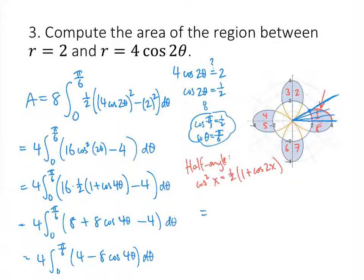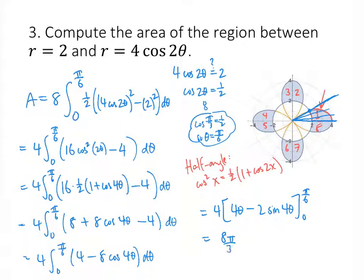By simple substitution, the antiderivative of 4 is 4 theta, and the antiderivative of 8 cosine 4 theta is 2 sine 4 theta. Plugging in pi over 6 and 0 and subtracting, the final answer is 8pi over 3 plus 4 times square root of 3, and that is the area of our region.